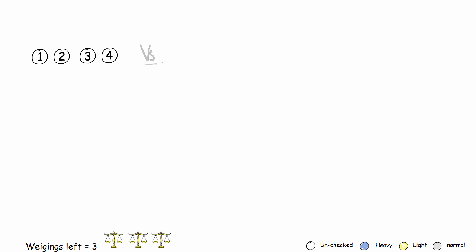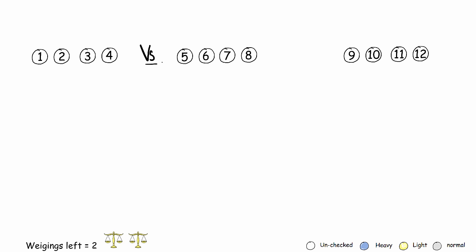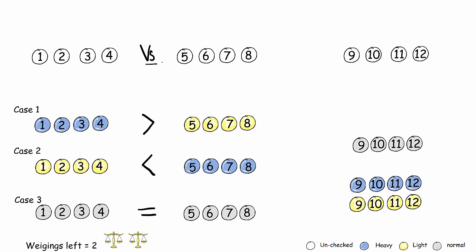The first thing we'll do is divide the balls into three groups of four and weigh two of them against each other. Let's weigh the first four balls against the middle four balls. If the scale shifts to the left, then either one of the first four balls is heavy or one of the middle four balls is light. If the scale shifts to the right, then either one of the middle four balls is heavy or one of the first four balls is light. If the scale balances, then the faulty ball is amongst the last four balls — it could either be heavy or light.